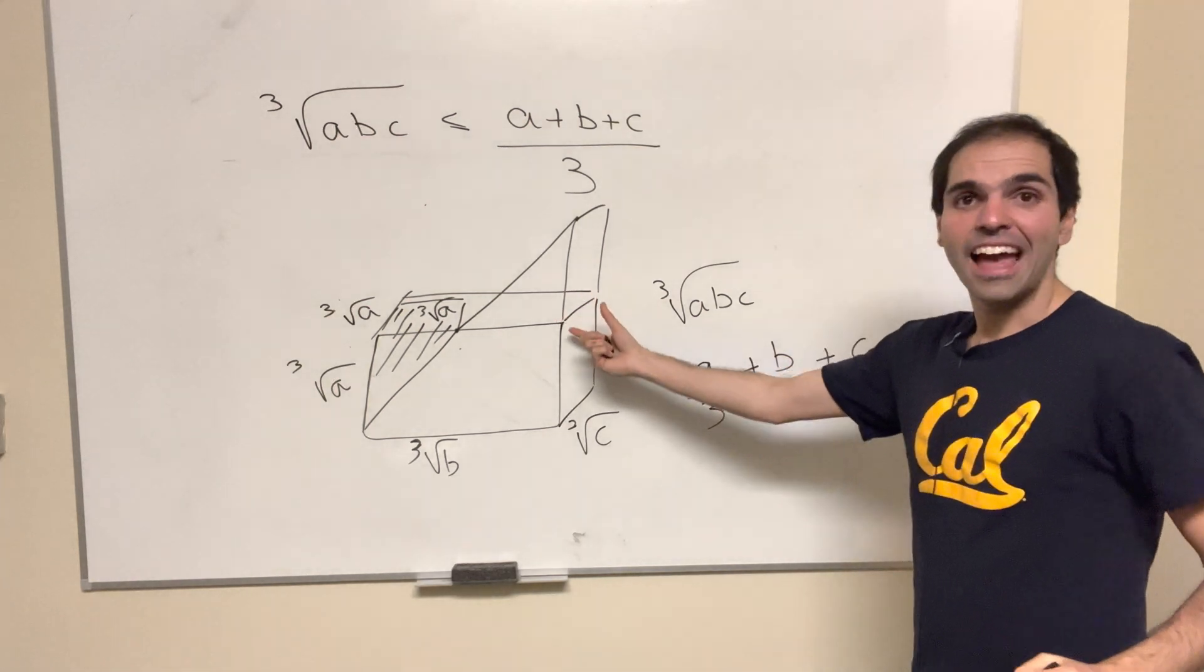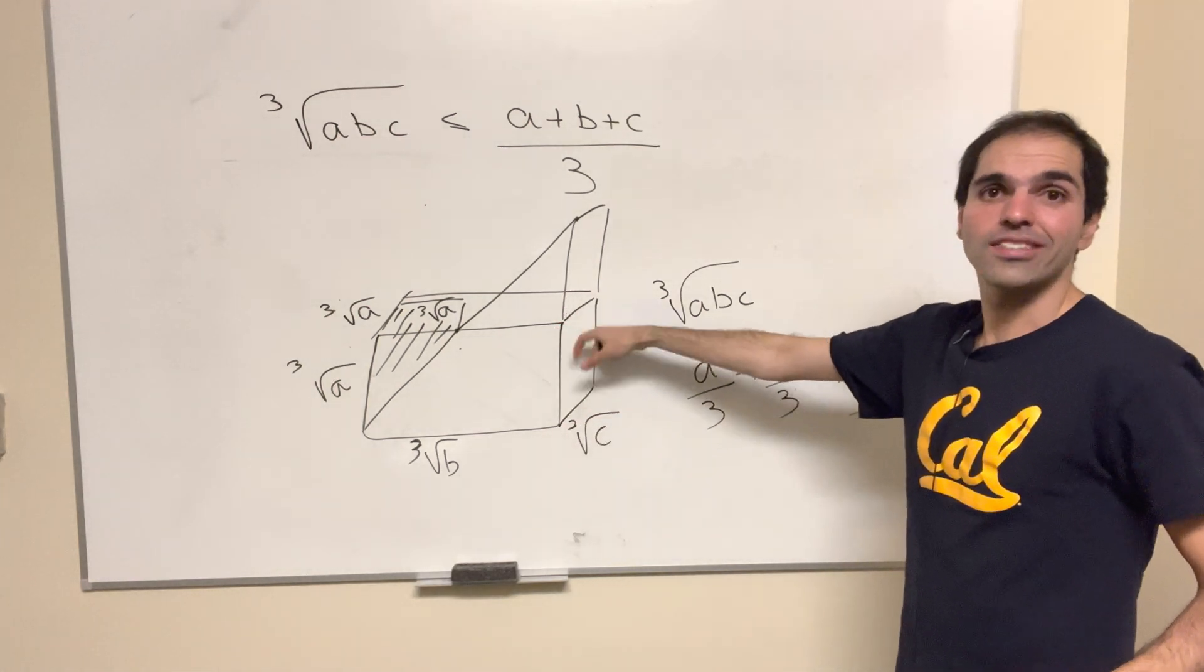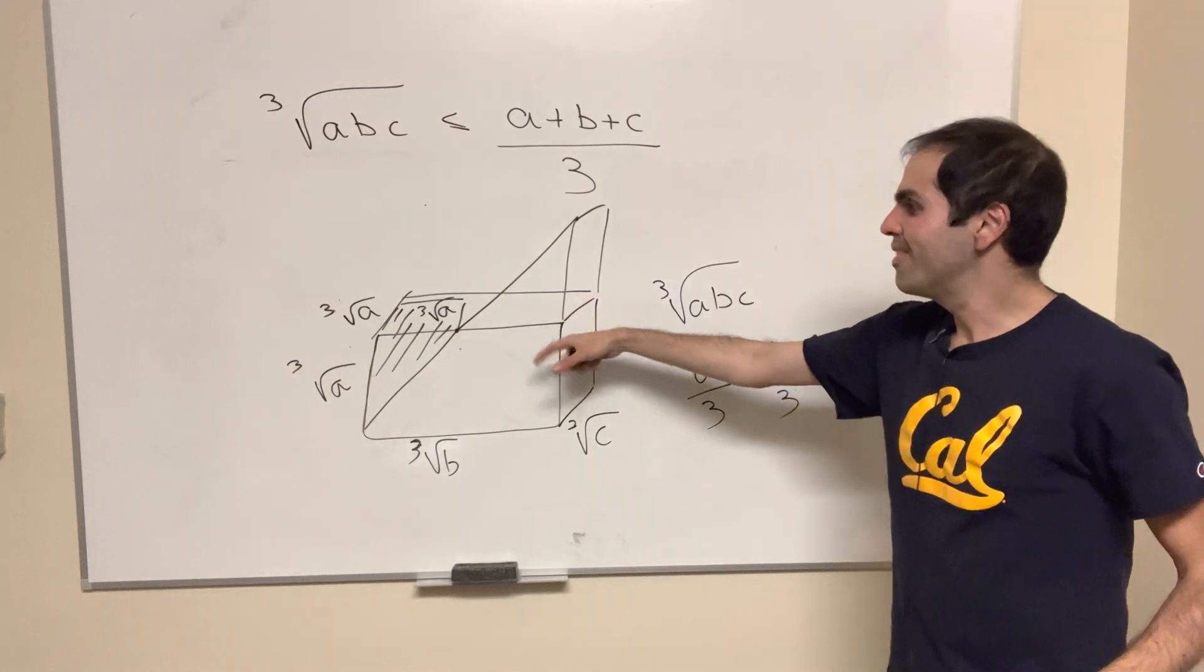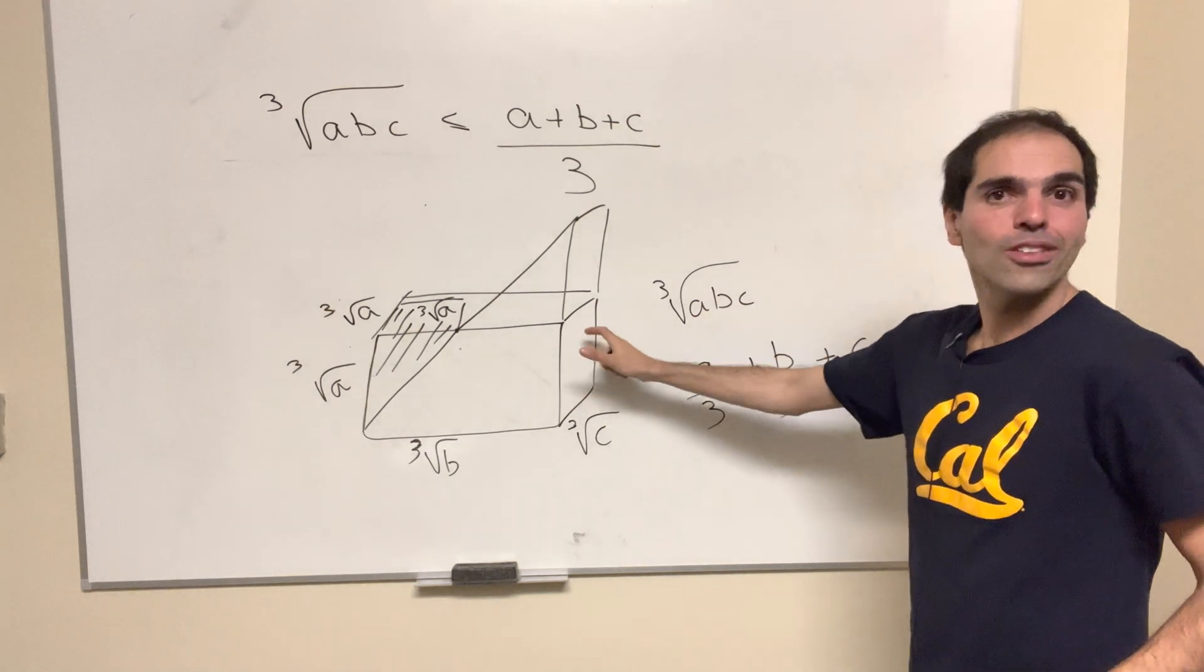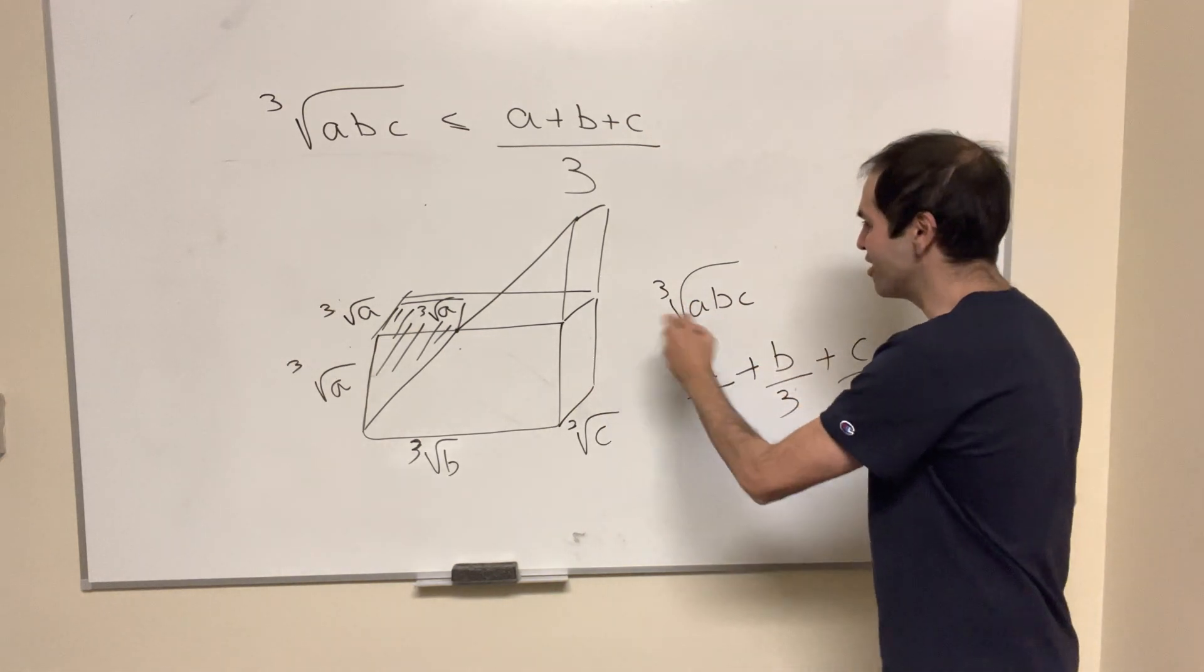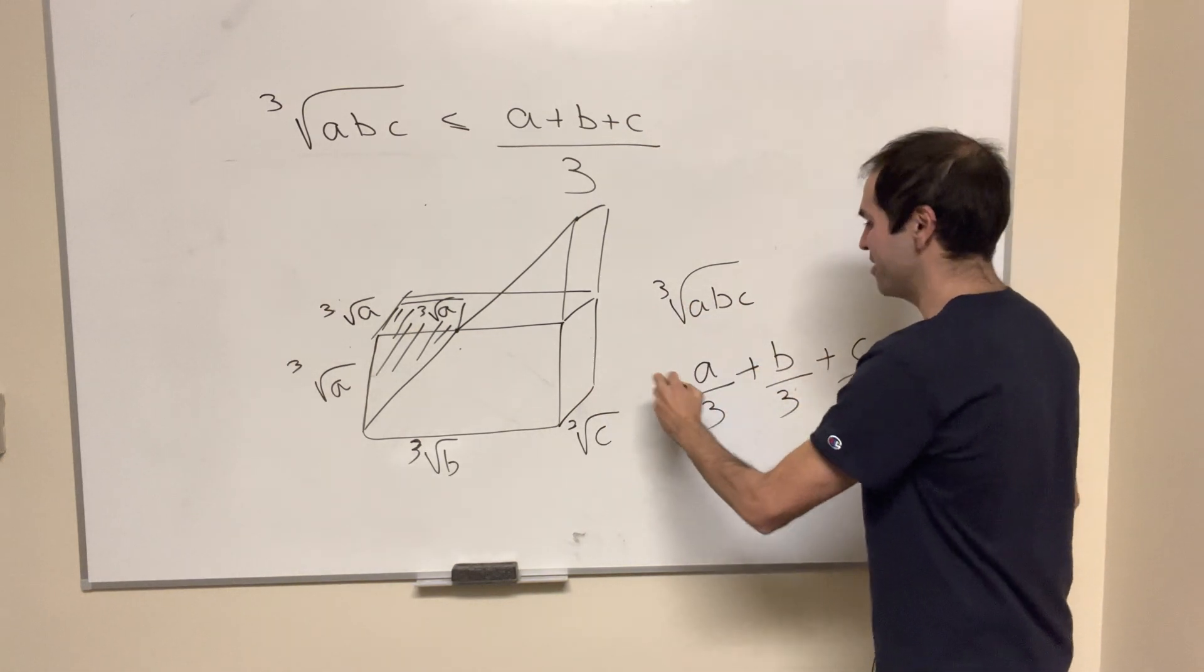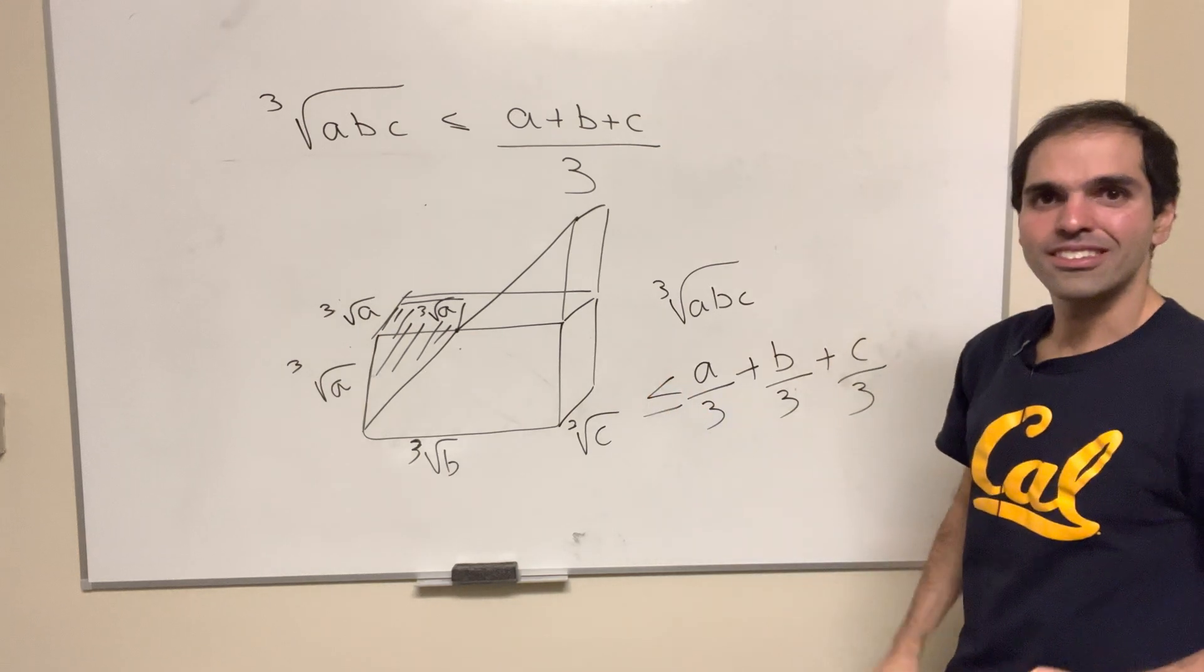And then what you get in the end is once again, the sum of the volumes of those pyramids is bigger than or equal to the volume of that box, which is cube root of a times b times c. So we get this. But as I said, this is more work in progress.